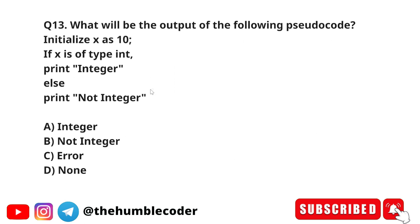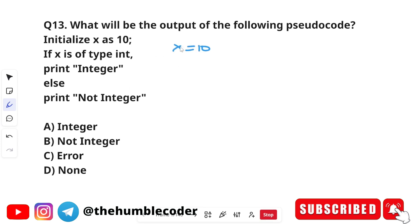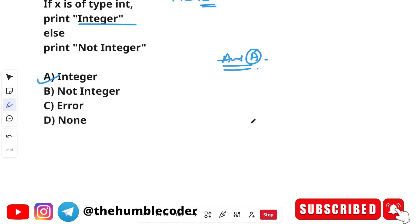Next question: what will be the output of the following pseudo code? Initialize x = 10; if x is of type int, print 'integer', else print 'not integer'. Since x = 10 is a whole number, it is indeed of type int, so it will print 'integer'. The correct answer is option A: integer.